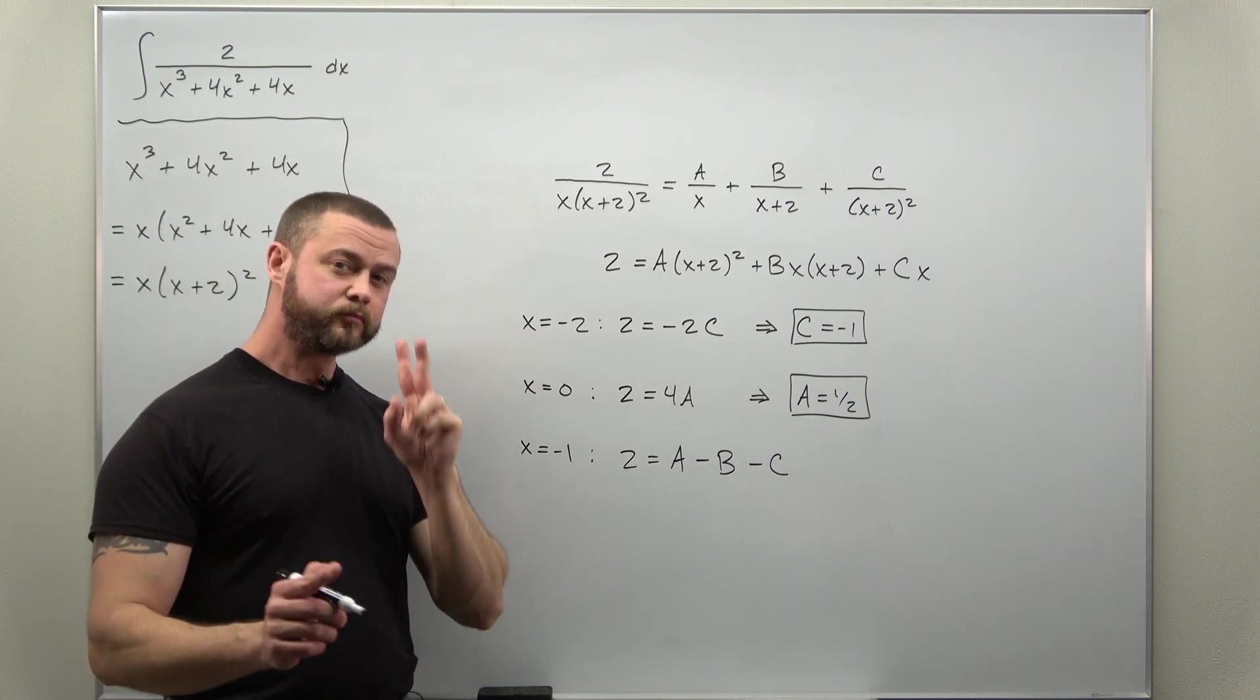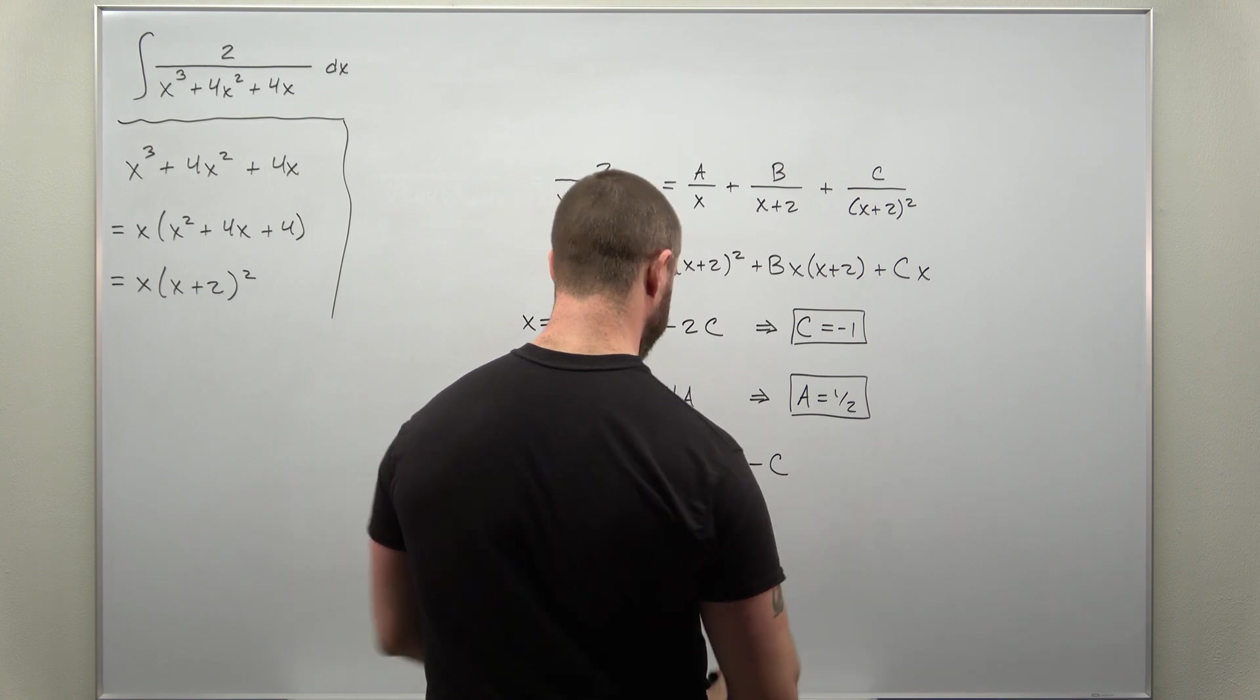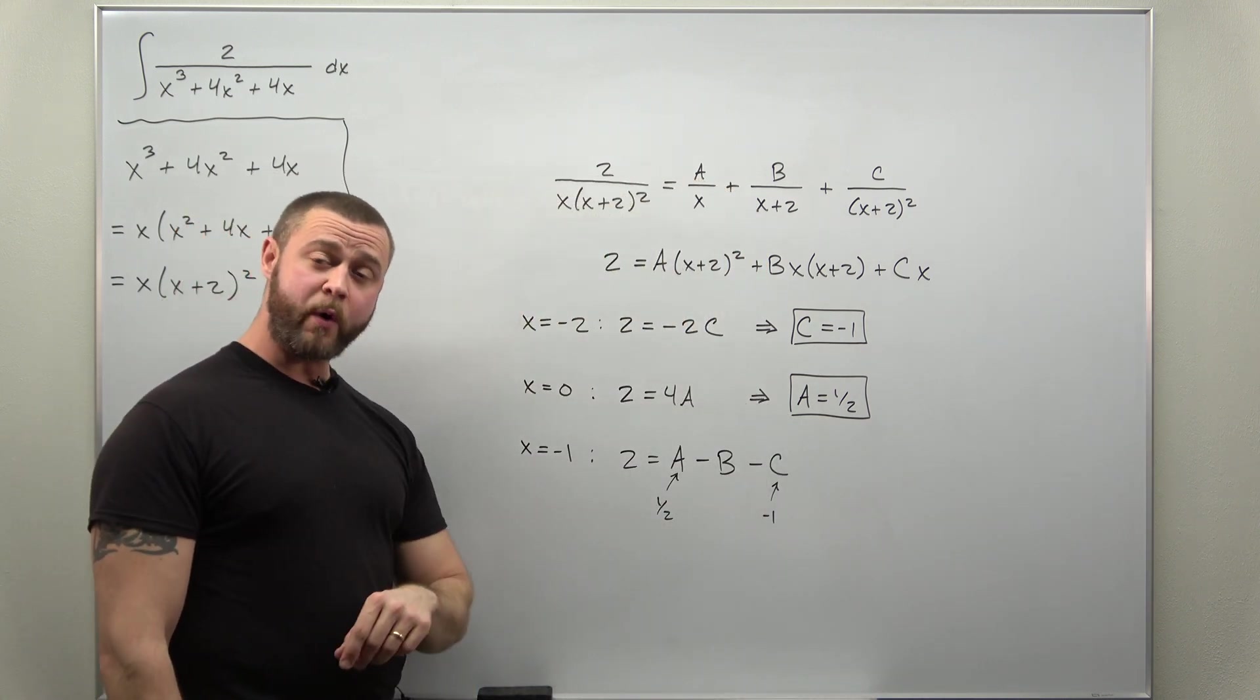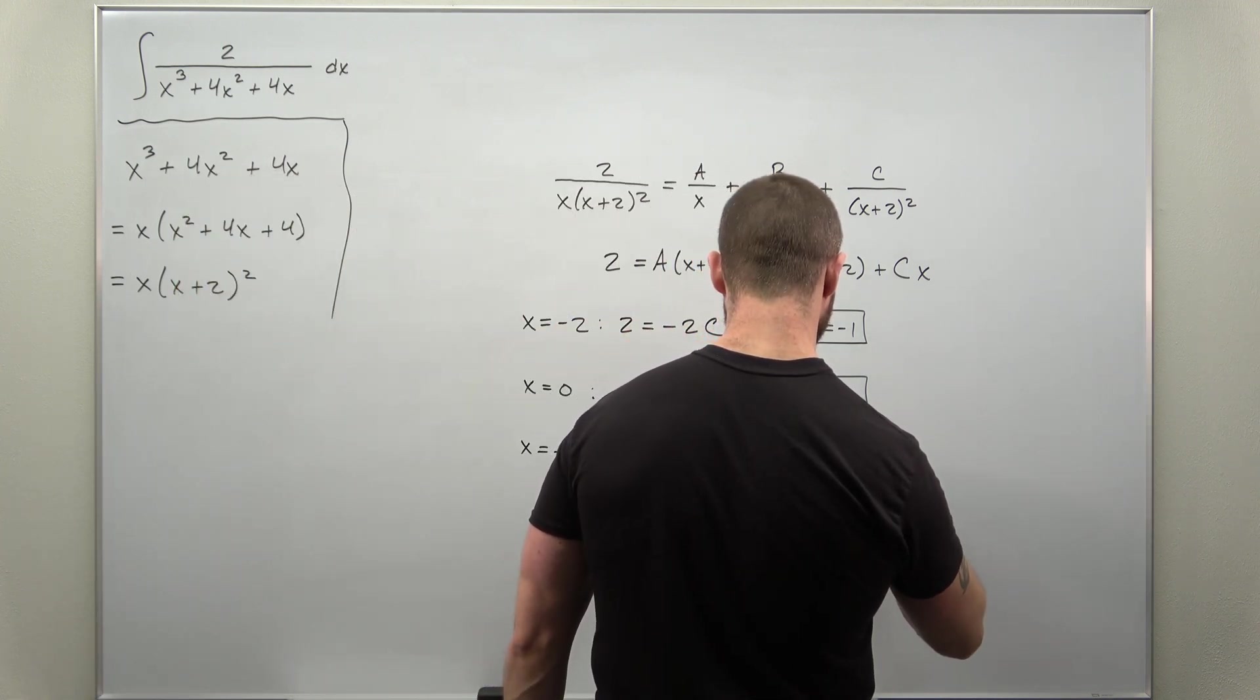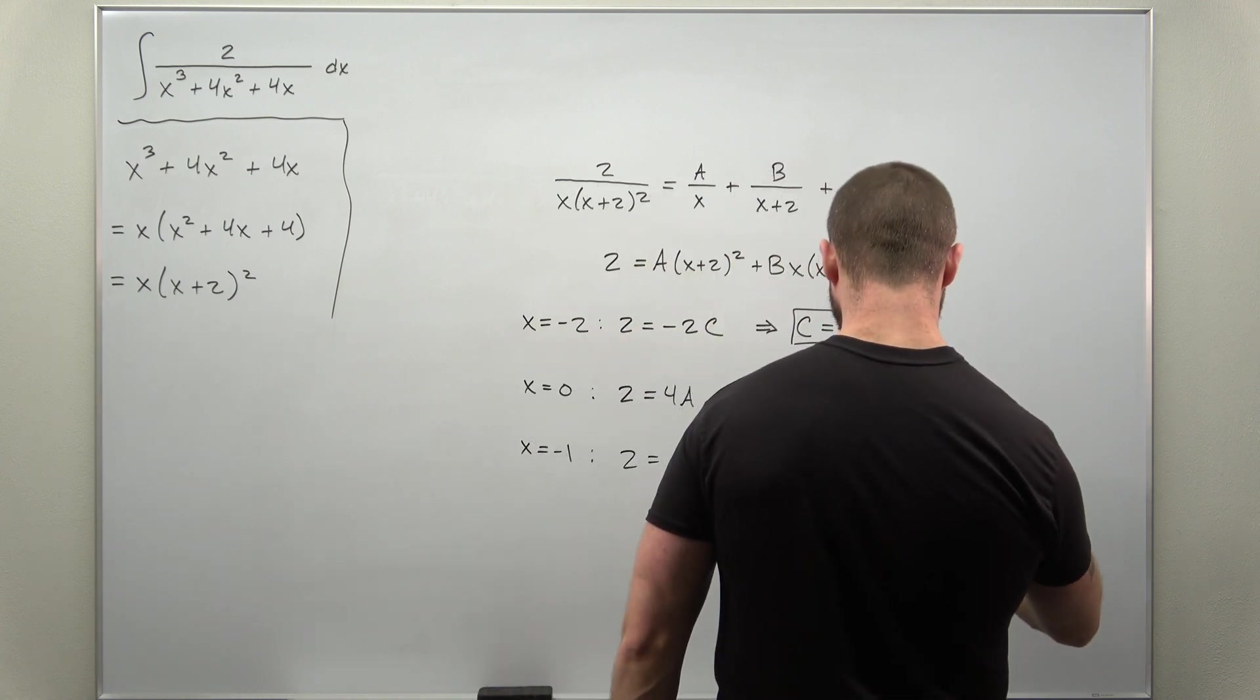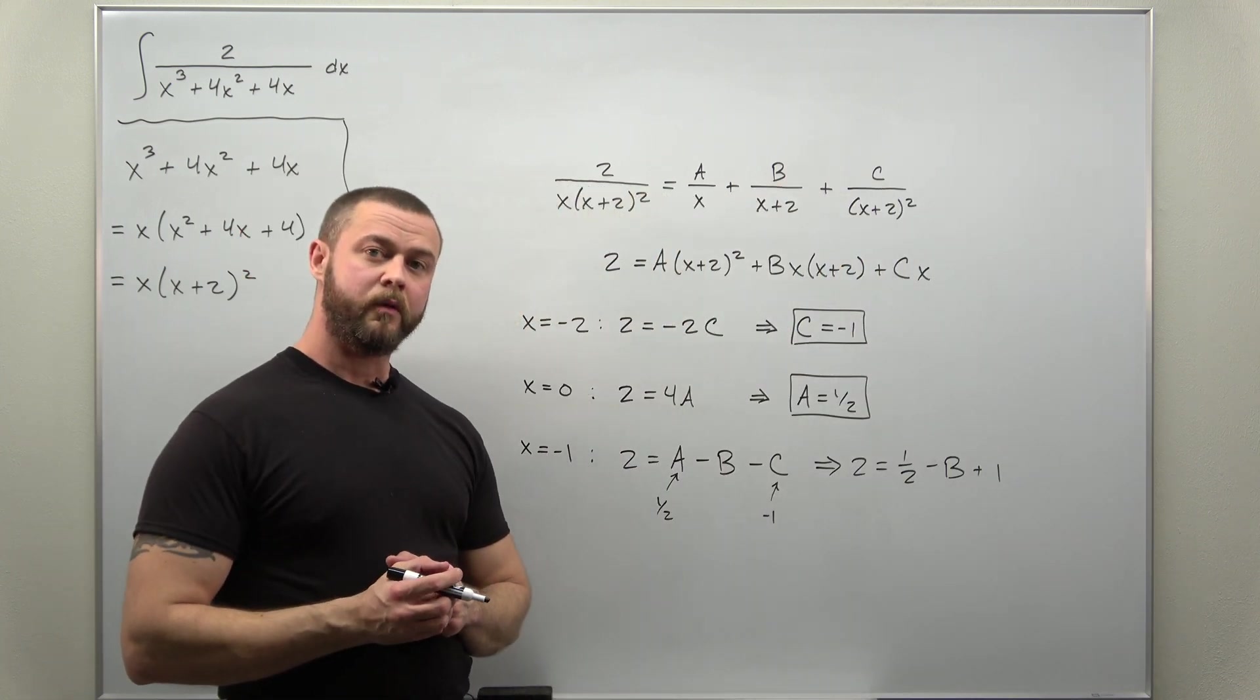Alright. From here, we have 2 out of the 3 values. So we can plug them in. So we can plug in a as 1 half and c as negative 1. Alright. If we do that, we should have an equation now only containing b. And it looks like what we get is the equation 2 equals 1 half minus b, but now plus 1.